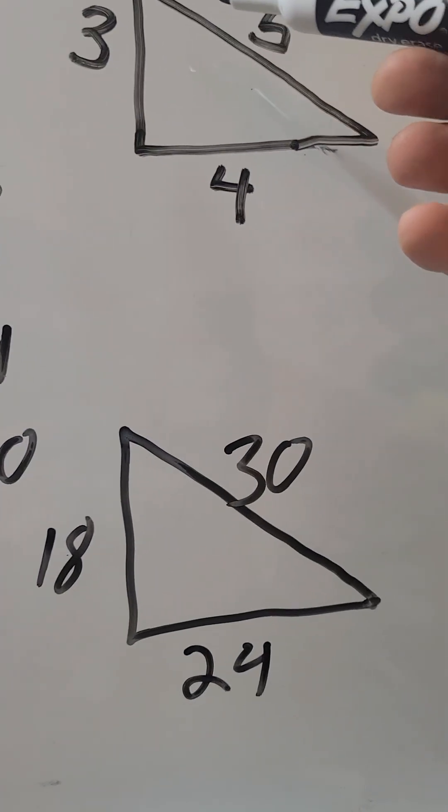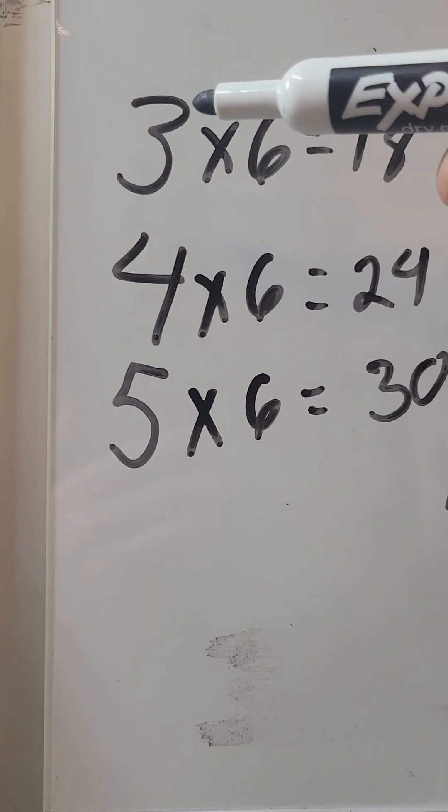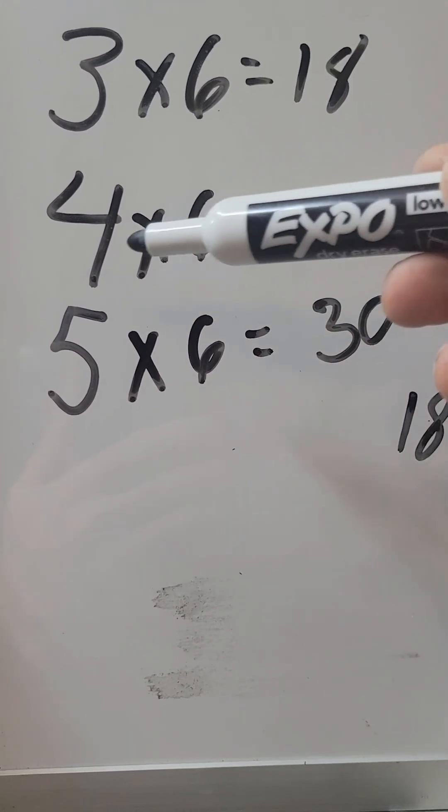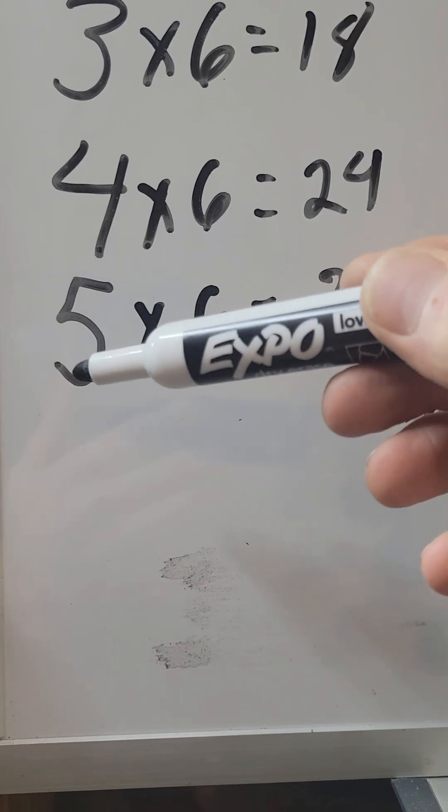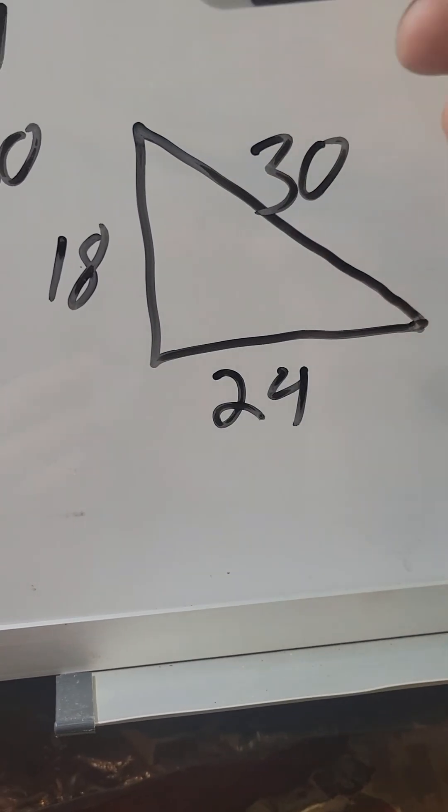So if you have your 3, 4, 5 rule, which is on the Essex board measure scale, you've got 3 times 6 is 18, 4 times 6 is 24, 5 times 6 is 30. You have a perfect right triangle right here.